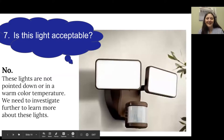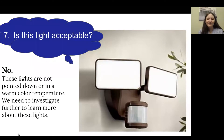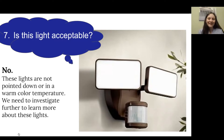Number seven: these lights are not acceptable because they are pointed outwards, spewing light forwards instead of being pointed down for a specific purpose. They also have a bright white light — you can see those white rectangles. We want to make sure they are a warm color temperature so that plants, animals, and humans aren't exposed to blue wavelength light. We also need to investigate more to learn whether they're serving a purpose, if they're controlled, and how bright they are.